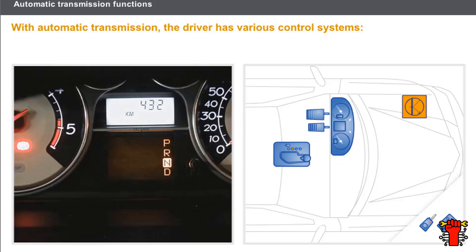A display of warning lights on the instrument panel or on the centre console informs the driver which gear is engaged and which mode is selected.